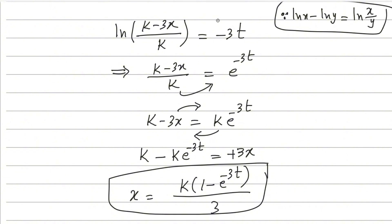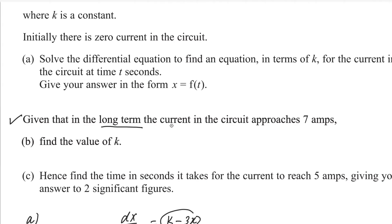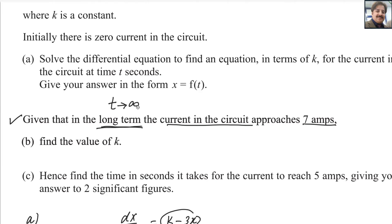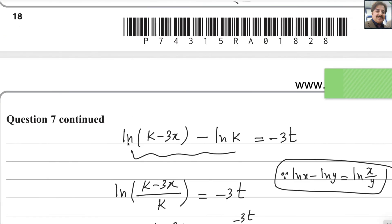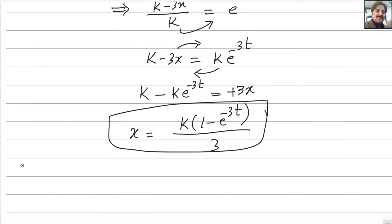For the next part: given that in the long term the current in the circuit approaches 7 amperes, find the value of k. For long-term behaviour, we apply the limit as time approaches infinity, since no specific time is given and we want the maximum time scenario: t approaches infinity.